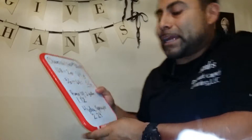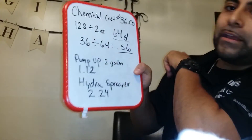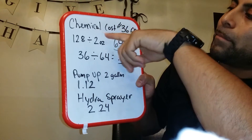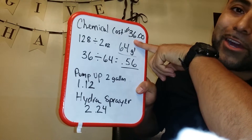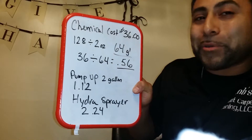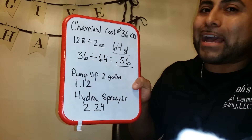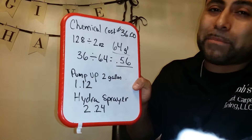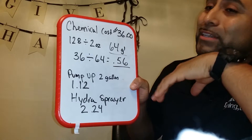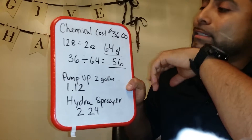So when I buy a chemical like I did today, I want to show you here — if you can see this — my cost of chemicals was $36. Now I'm not the big math guy, so the simpler the better. I'm going to show you simple calculations, just real easy.